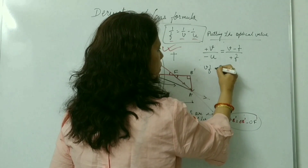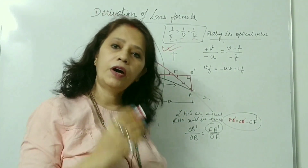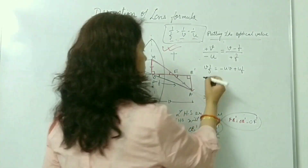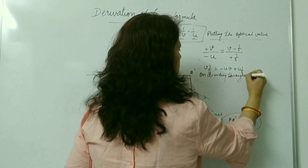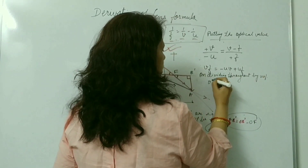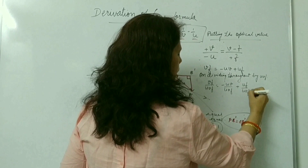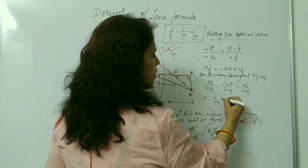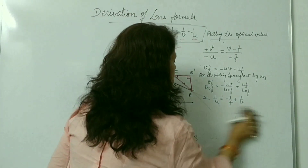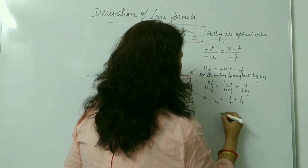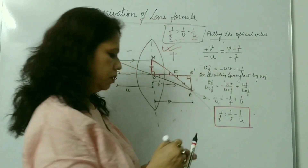On cross multiplication, we get: VF = −UV + UF. To get the standard lens formula, we divide each term by UVF throughout. This gives: 1/U = −1/F + 1/V. On rearranging, we get the lens formula: 1/F = 1/V − 1/U.